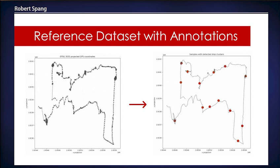We found plenty of openly available datasets, but none of these contained any stop or trip labels to distinguish periods of dwell or transit. Today I'll present our solution to this problem: a new publicly available dataset of GPS samples, including precise stop and trip annotations.